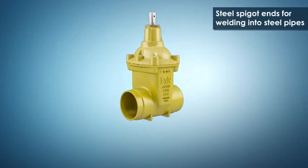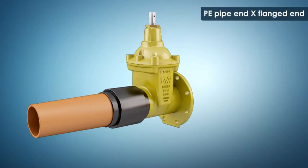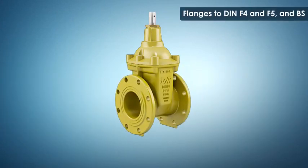A range of gate valves dedicated for gas supply. Steel spigot ends for welding into gas steel pipes. PE ends for welding into PE gas pipes. One PE pipe end, one flanged end. Flanges to DIN F4, F5, and BS.